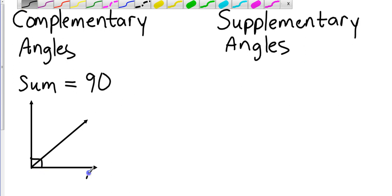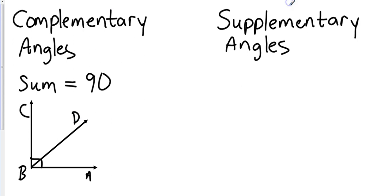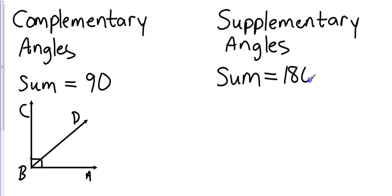So if we call the angles A, B, C, and D, then angle ABD and angle CBD are complementary because they add up to equal 90 degrees. On the other hand, supplementary angles have a sum equal to 180 degrees. Supplementary angles are actually a linear pair, so they add up to equal 180 degrees.